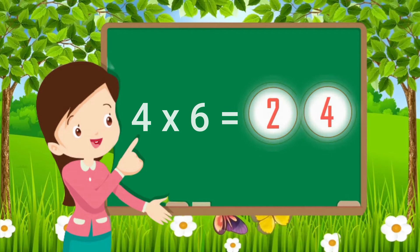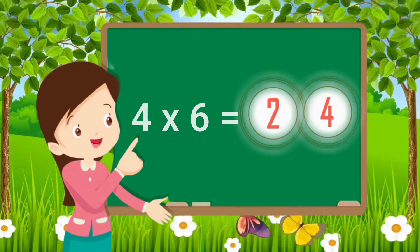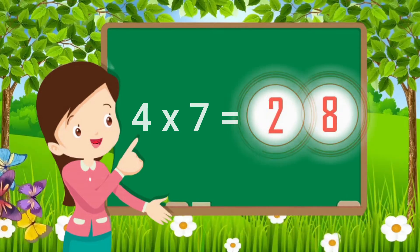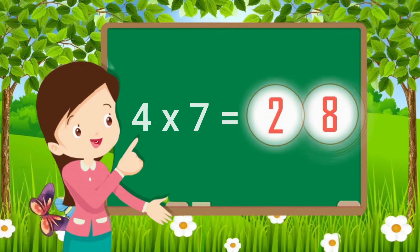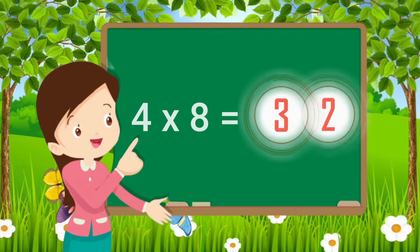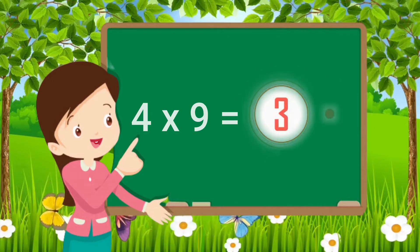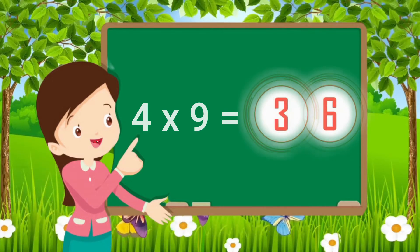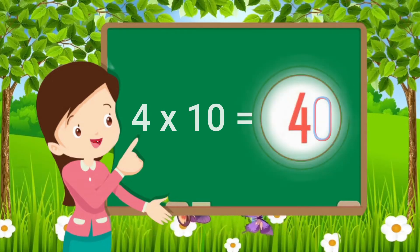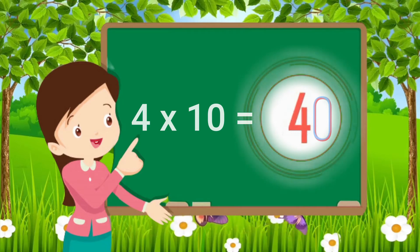Four sixes are twenty-four. Four sevens are twenty-eight. Four eights are thirty-two. Four nines are thirty-six. Four tens are forty.